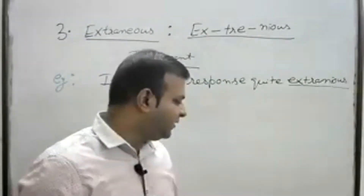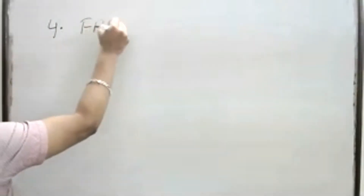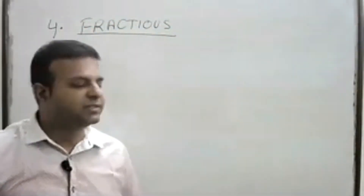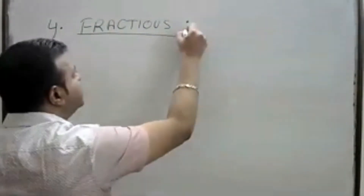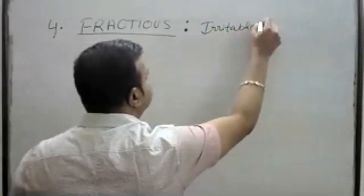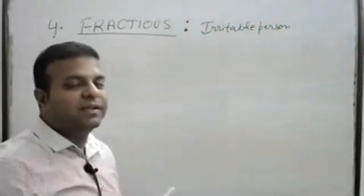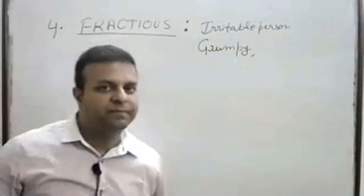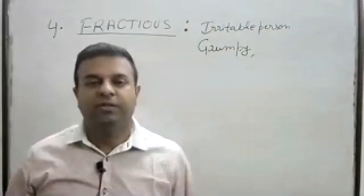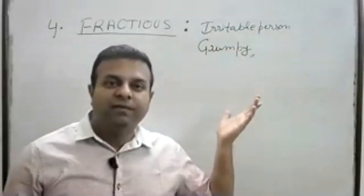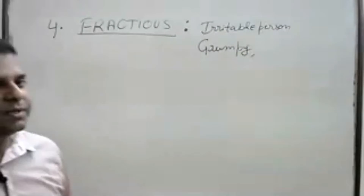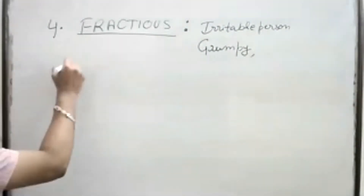Our fourth word is 'fractious' — F-R-A-C-T-I-O-U-S. Fractious means an irritable person, especially children, when they become grumpy. When children are not taught good ethics, you may see a behavioral change — they may become grumpy, start to irritate someone, and become fractious.